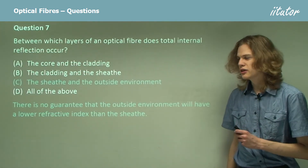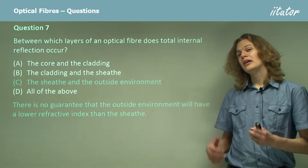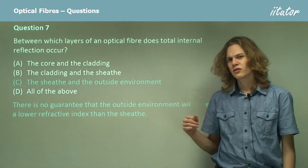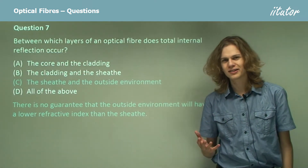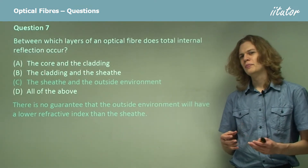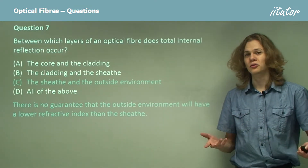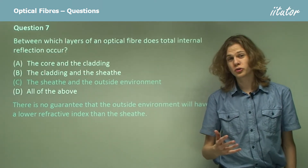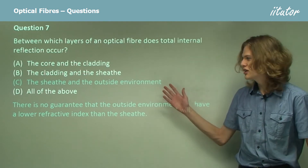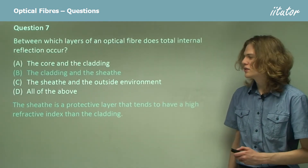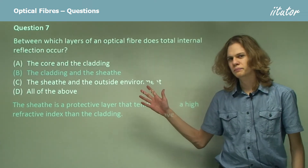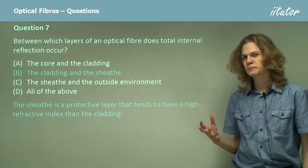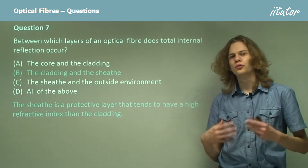If we were to say C — the sheath and the outside environment — it would mean that the outside environment must have a higher refractive index than the sheath. The problem is we can't guarantee that. Supposing we're embedding an optical fiber inside diamond — diamond has a very high refractive index, so it would be nearly impossible to get total internal reflection occurring in the sheath.